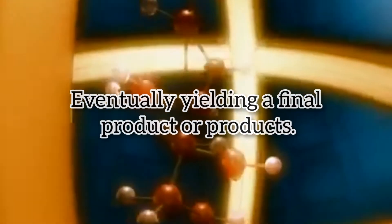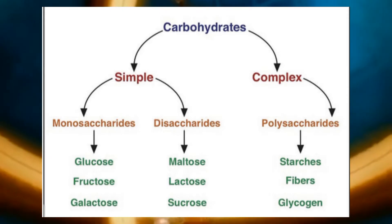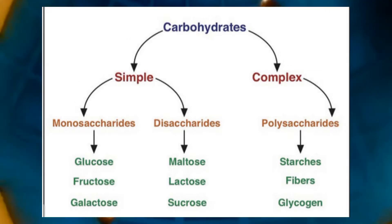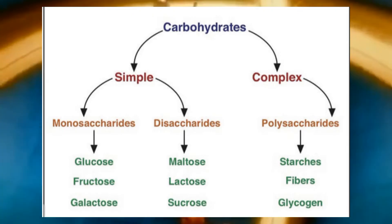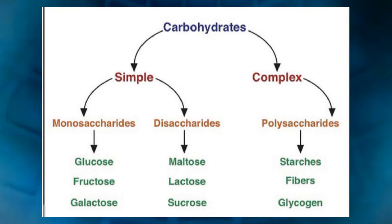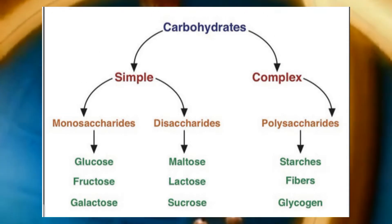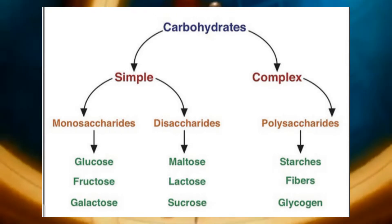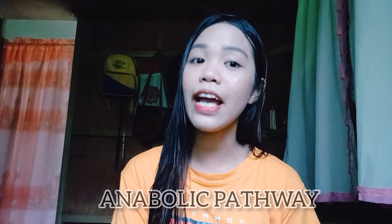For example, one metabolic pathway for carbohydrates breaks large molecules down into glucose; another metabolic pathway might build glucose into large carbohydrate molecules for storage. The first of these processes requires energy and is referred to as anabolic; the second process produces energy and is referred to as catabolic.